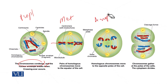After anaphase 1, in the last stage, the chromosomes have reached the opposite pole. The cleavage furrow forms and two daughter cells are produced. But this is not the end of meiosis — this is the end of meiosis 1, and after this these two cells will undergo further division.